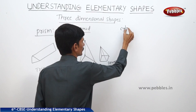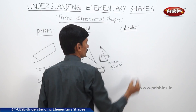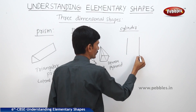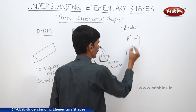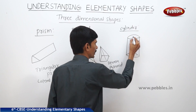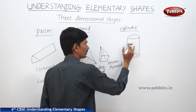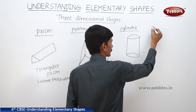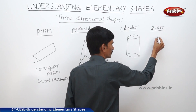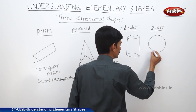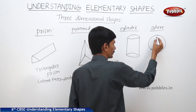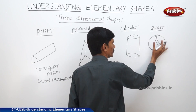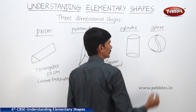Next is a cylinder. A cylinder is also a type of three-dimensional shape. It has two circular bases and the lateral face is curved. Next is a sphere — it is also a three-dimensional shape where all the surfaces are curved, so it is said to be a sphere.